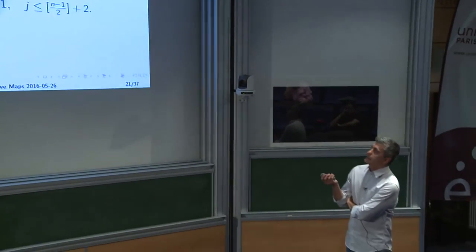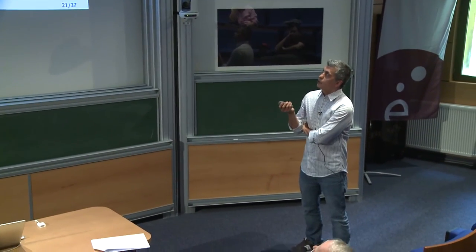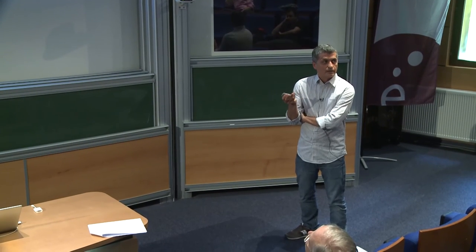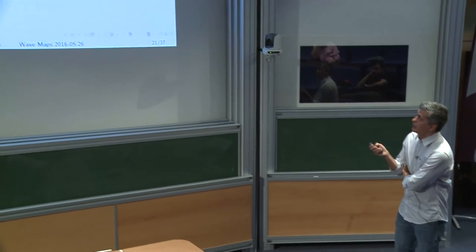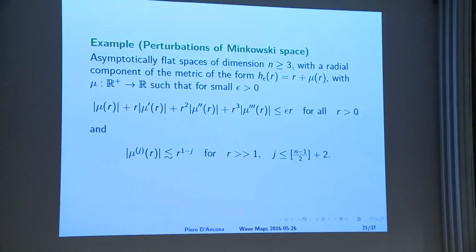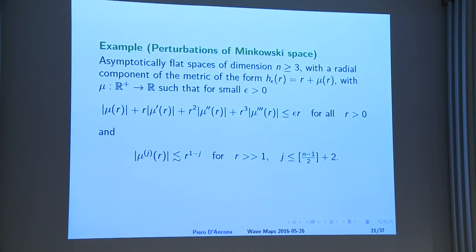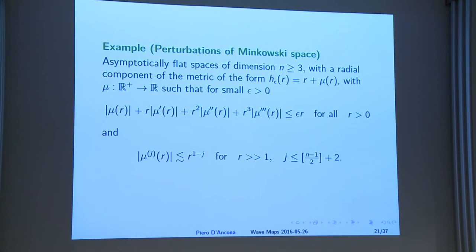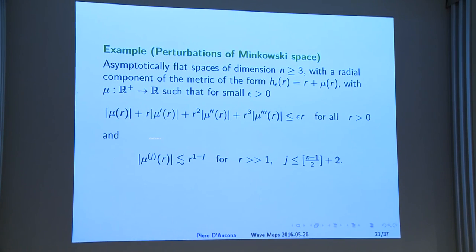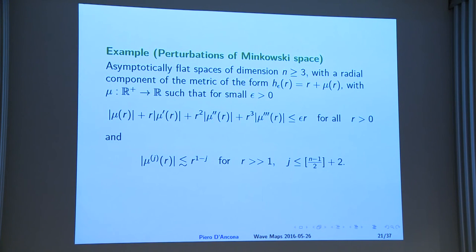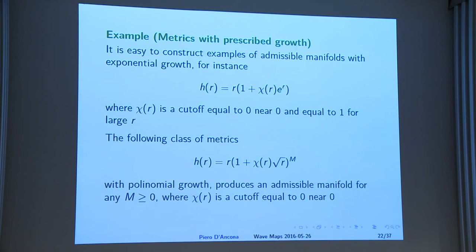Asymptotically flat spaces can also be included. You perturb flat space where h is precisely r, adding something which decays like 1/r — this is actually a small perturbation. The reason this is so different from the other case is that what matters is the ratio between mu and h. If h grows a lot, this ratio is automatically small. It is quite easy to construct many more examples entering this set of assumptions.